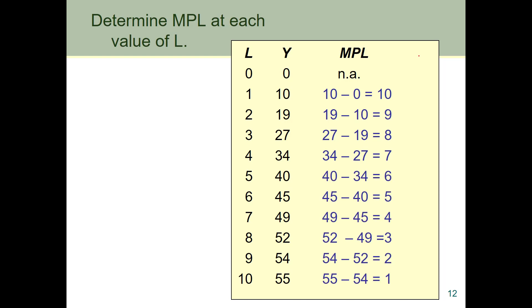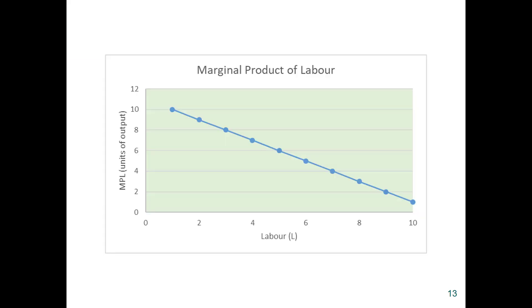What we can see is that as labour increases, our marginal product of labour decreases. That corresponds to the flattening out of the production function we saw in the previous graph. What we'll do next is to plot these values of the marginal product against labour — again with labour on the horizontal axis and this time the marginal product of labour on the vertical axis.